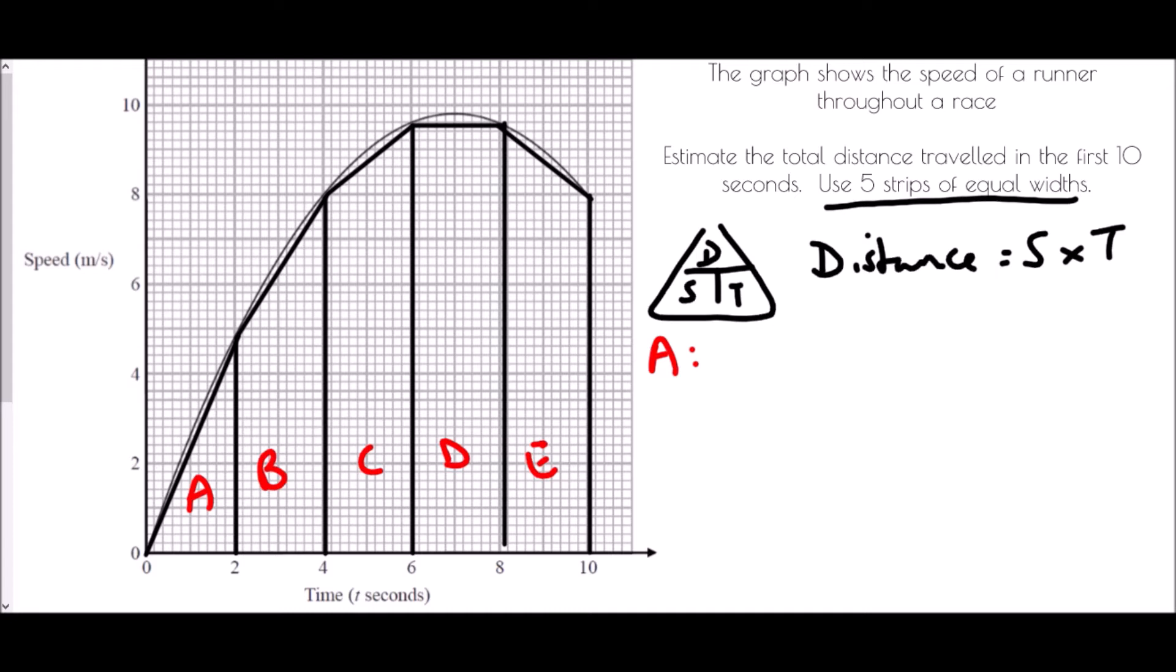In section A, I've actually just got a triangle. And so all I need to do is a half times base times height. And so that would be in this case, it's a half of the base, which is 2, and times the height, which in this case is 4.8. And so a half of 2 is 1 times 4.8. Well, that is 4.8 metres. And so the first section, we are saying that they travelled 4.8 metres in the first two seconds.